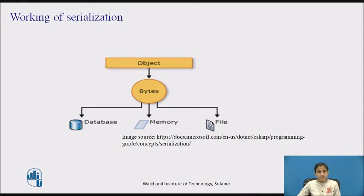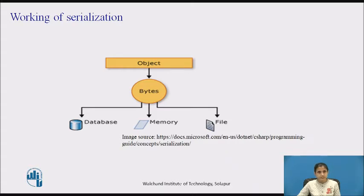This diagram shows the overall process of serialization. The object is serialized to a stream that carries the data. The stream may also have information about the object's type such as version, culture, assembly name, etc. From that stream, the object can be stored in a database, a file, or memory.